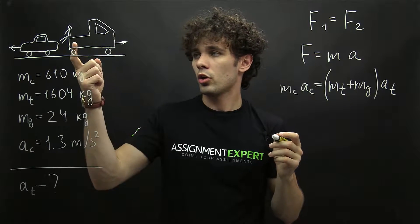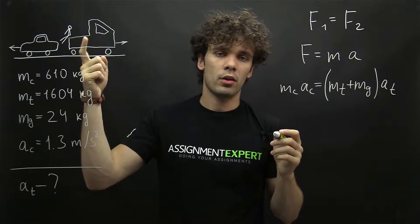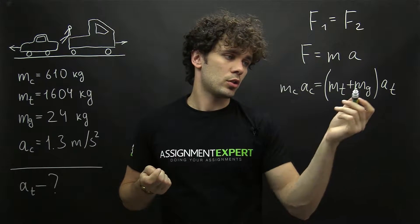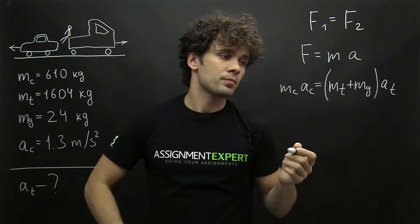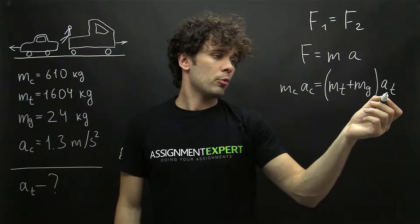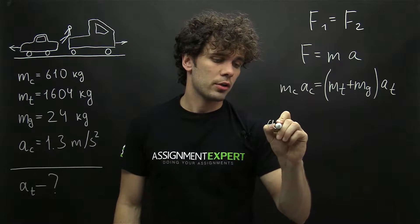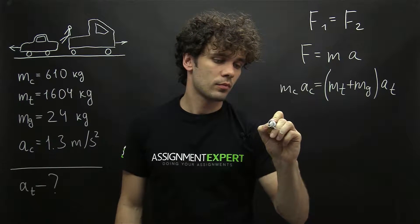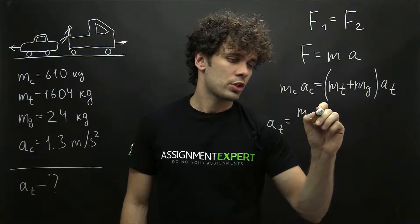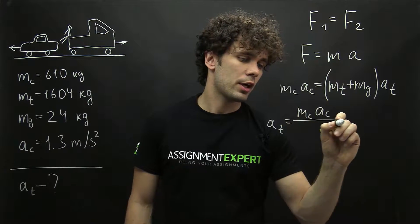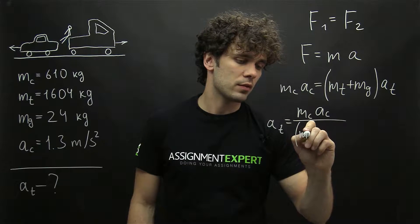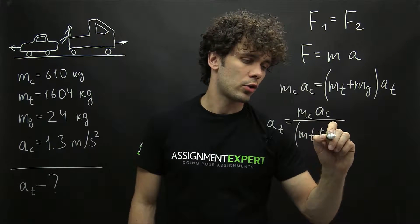Because the girl is sitting in the truck, she has no acceleration of her own, so only the acceleration of the truck applies here. From this we can derive the acceleration of the truck as the mass of the car times the acceleration of the car, divided by the sum of the mass of the truck and the mass of the girl.